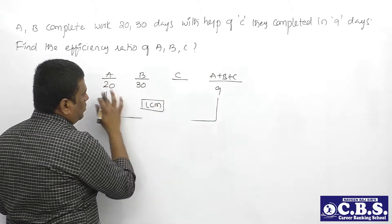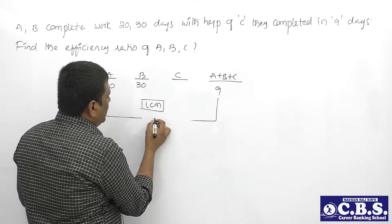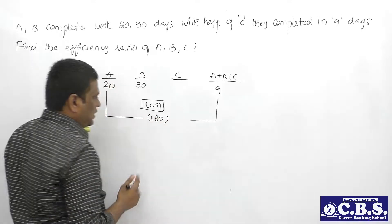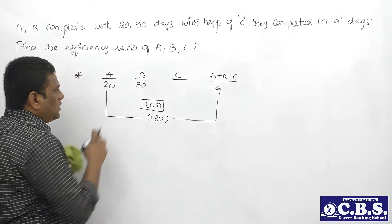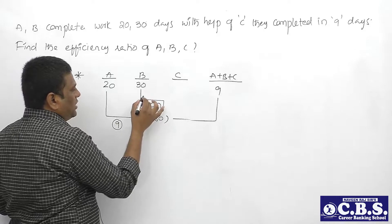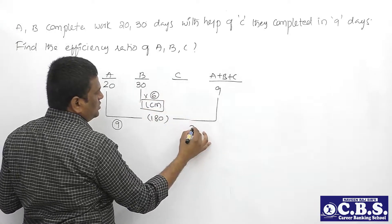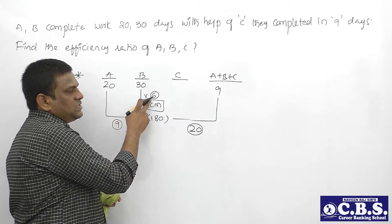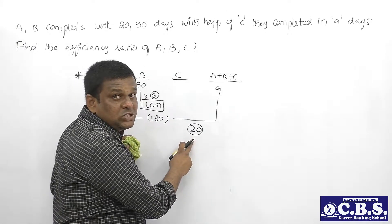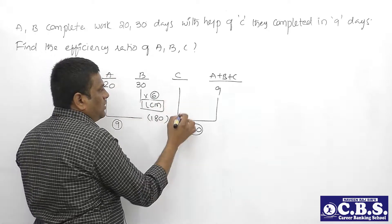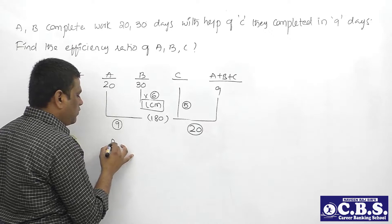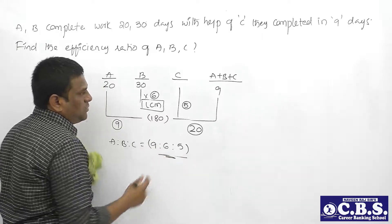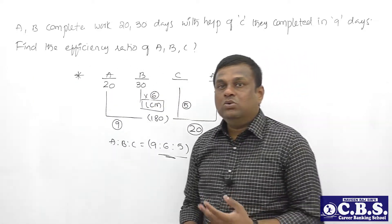So total work = 180 units. A's efficiency = 180 ÷ 20 = 9 units per day. B's efficiency = 180 ÷ 30 = 6 units per day. A+B+C together complete 180 ÷ 9 = 20 units per day. Since A + B = 9 + 6 = 15, C's efficiency = 20 - 15 = 5 units per day. Therefore, the efficiency ratio of A : B : C = 9 : 6 : 5. This is a simple method - no need to follow the traditional approach.